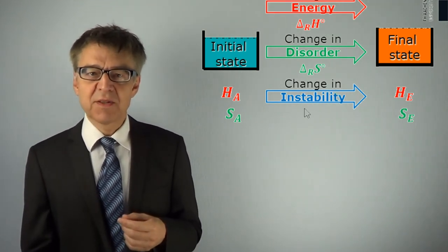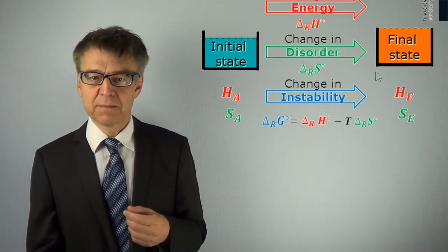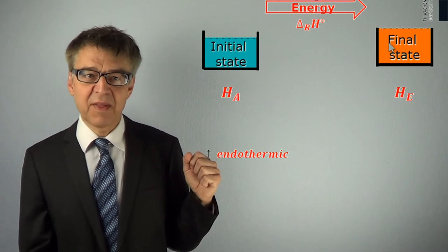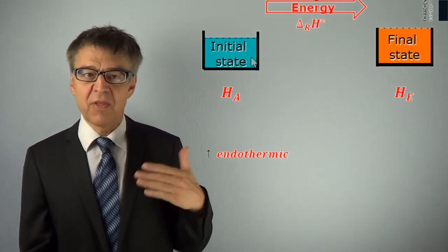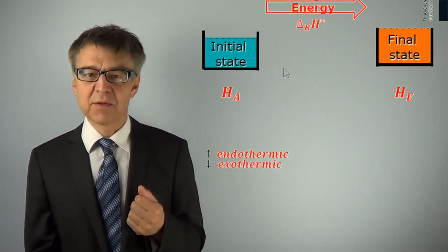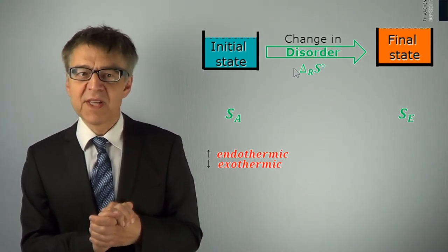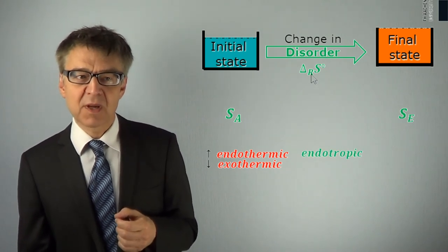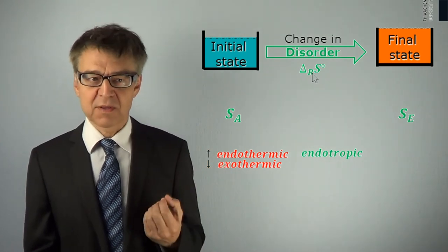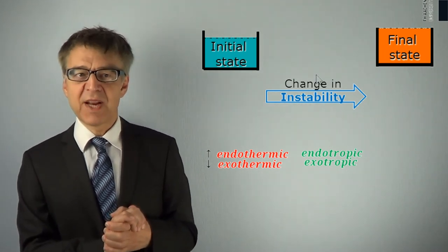When the enthalpy change is positive, the process is called endothermic. Enthalpy of the final state is greater than the enthalpy of the initial state. In the opposite case, when enthalpy decreases, we speak of an exothermic process. If we consider the change of the chaos during a process, we may distinguish between an endotropic process, chaos in the system increases, and an exotropic process, the chaos decreases locally in the system.